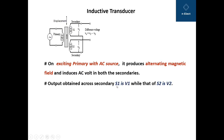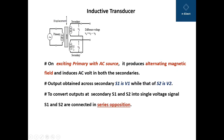The output obtained across secondary S1 is V1 and the output obtained across secondary S2 is V2. Since S1 and S2 are connected in series opposition, the output voltage of the transducer V0 is equal to V1 minus V2, which is called the differential output voltage.